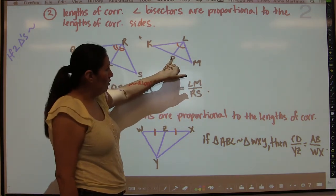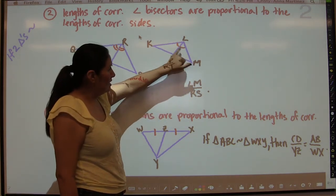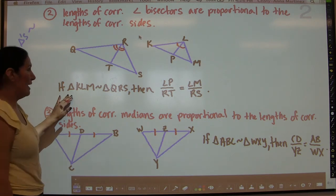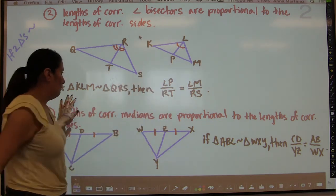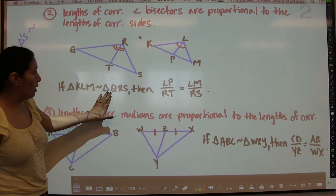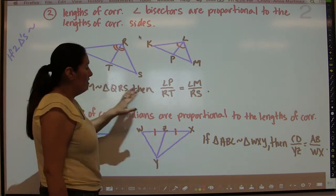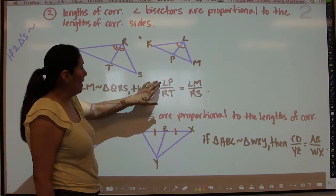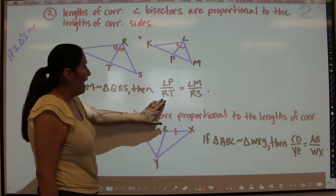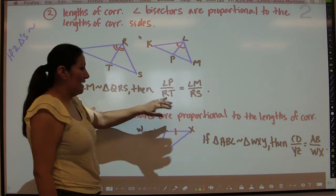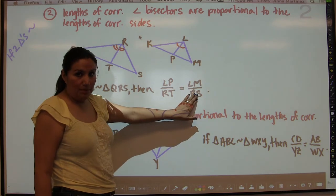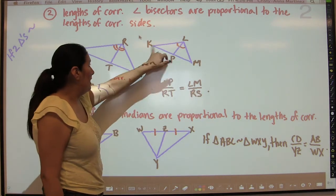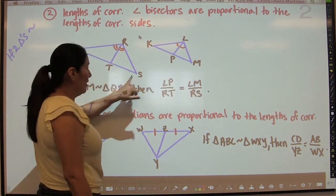RT is the angle bisector in one triangle because those two angles are marked congruent, and LP is the angle bisector in the other because those two angles are marked congruent. So if triangle KLM is similar to triangle QRS, then LP to RT equals LM to RS — and again, that pair of corresponding sides could change to KL and QR, or KM and QS.